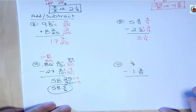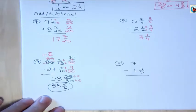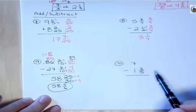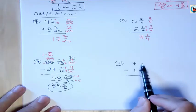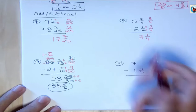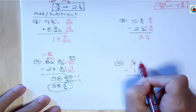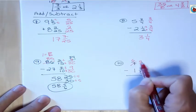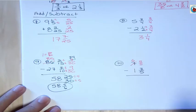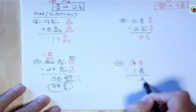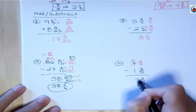Okay. So this one's 7 minus 1 and 3 fifths. Well, you know, you can't take 3 fifths away from nothing. So we need to rewrite the 7 as 6 and 5 fifths. 5 fifths is equal to 1 plus the 6 makes 7. And so now I can subtract that 3 from 5 is 2 and 6 from 1 is 5.